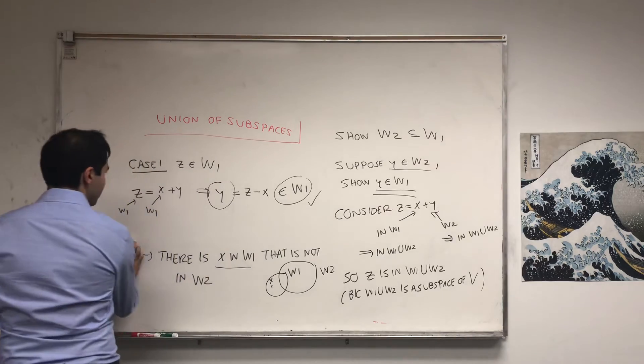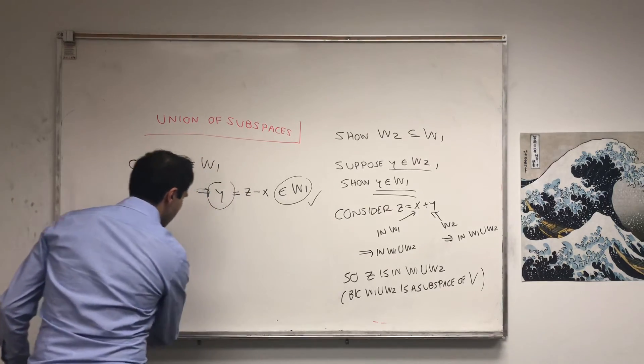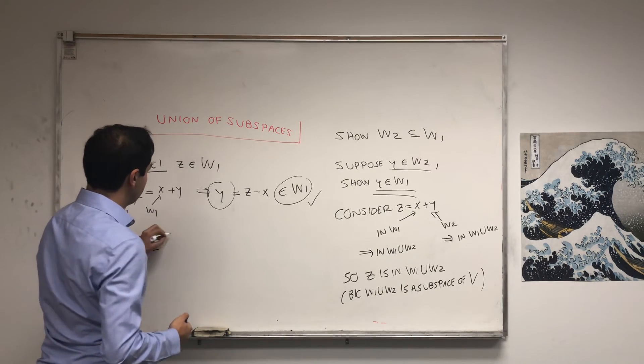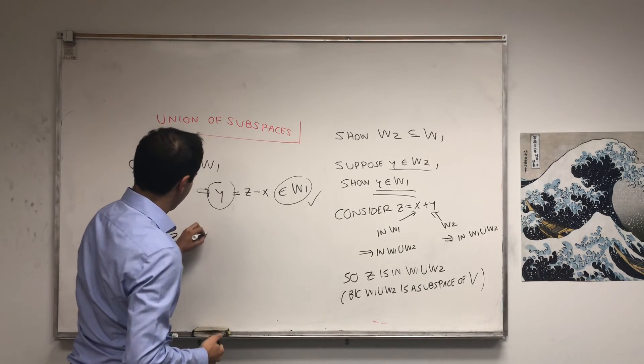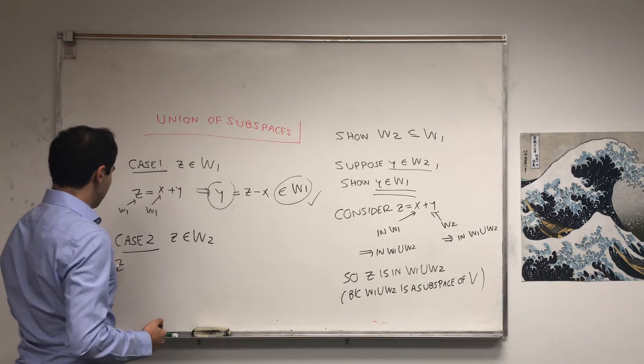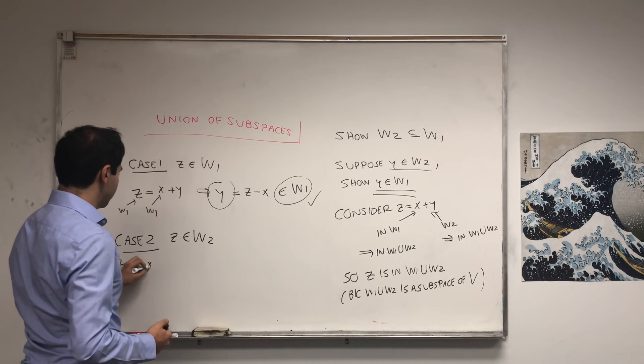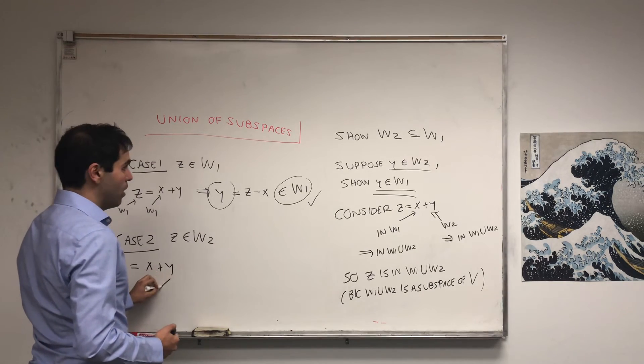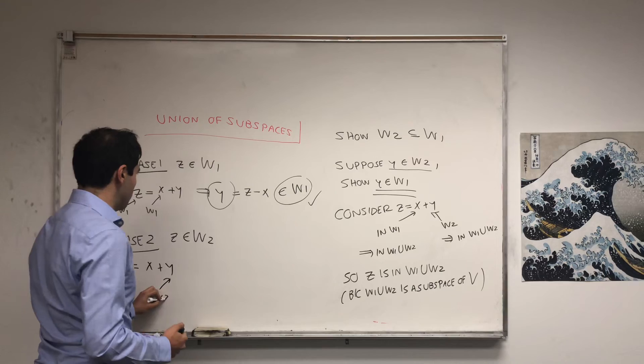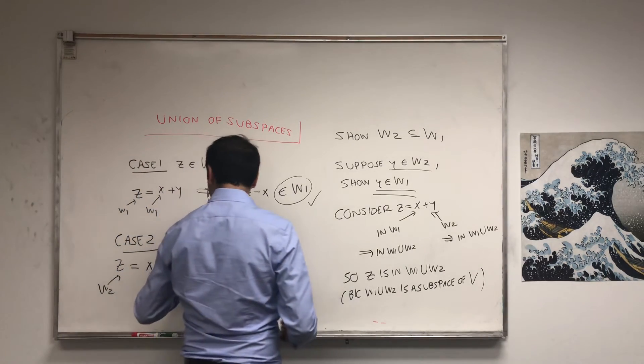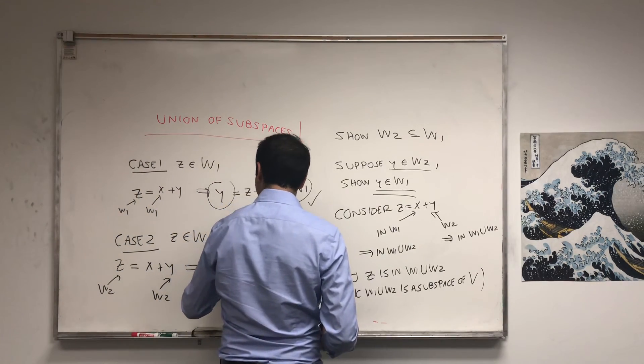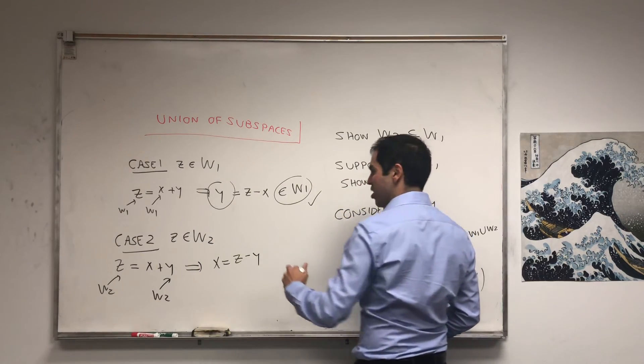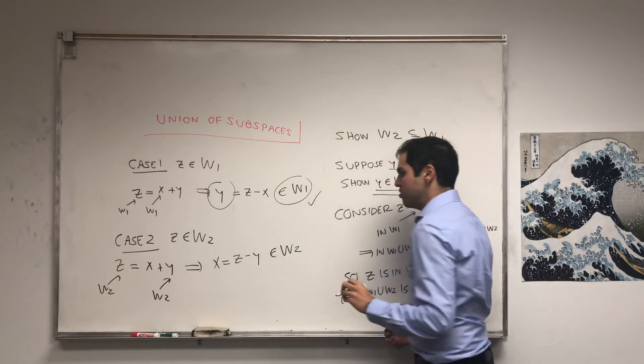Now, what about the other case? And we'll see if we have a problem. So, case two. z is in W2. But then, what do we have? z equals to x plus y. We know that z is in W2. And we also know that y is in W2. And in that case, x, which is z minus y. It's the difference of two elements in W2. And this is in W2.